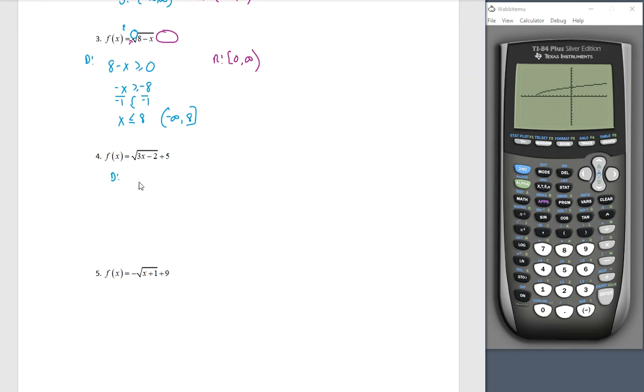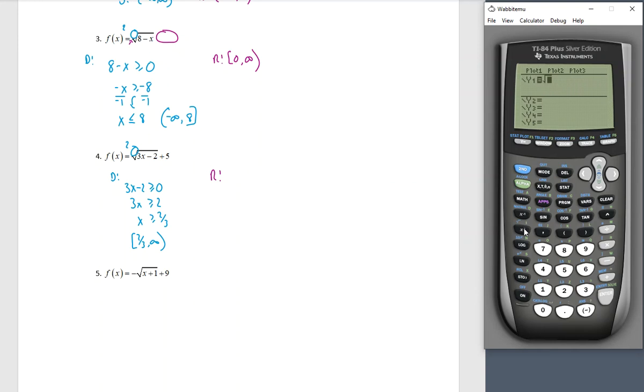Number four. My domain. Index is two. That's even. So I'll take three x minus two greater than or equal to zero. Add two to both sides and divide by three. If x is greater than or equal to two thirds, then our interval is from two thirds to infinity. Now our range. Let's take a look at this one. We're going to go back to a standard window. Let's put in our new function. Our function is the square root, three x minus two, and now we'll add a plus five. Keep in mind that plus five is not under the radical.